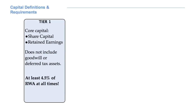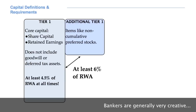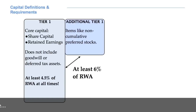In Basel 3, the total capital of a bank consists of three components. The first one is called Tier 1, or Core Capital. It is made up of share capital and retained earnings, but it does not include goodwill or deferred tax assets. Tier 1 capital must be at least 4.5% of risk-weighted assets at all times. Tier 1 capital is then extended with an additional component, very creatively called Additional Tier 1. This component includes extra items, such as non-cumulative preferred stocks.